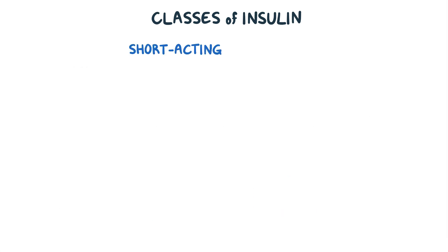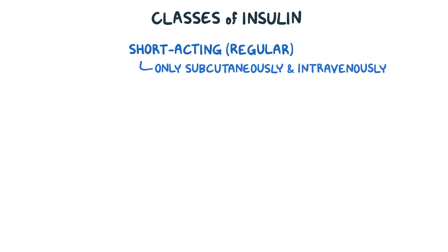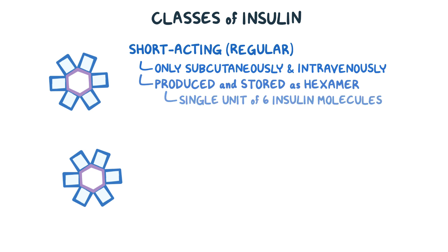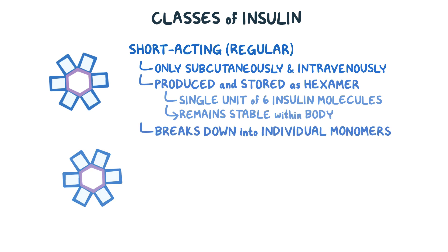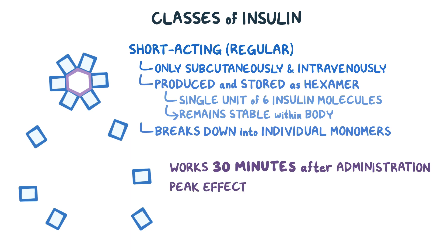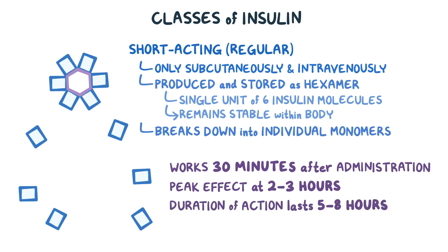Next are the short-acting insulins, or regular insulin, which is the only type of insulin that could be given subcutaneously and intravenously. Regular insulin in the body is generally produced and stored as a hexamer, which is simply a term used to describe a single unit of six insulin molecules. This structure allows insulin to remain stable within the body and break down into individual monomers in order to become active. Regular insulin only begins working 30 minutes after administration, and its effect peaks at two to three hours. Its duration of action lasts between five to eight hours, and besides diabetes mellitus, it can be used to treat hyperkalemia.